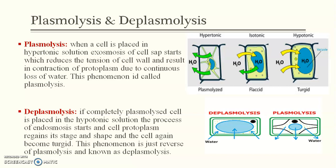Next is Deplasmolysis. It is the opposite of Plasmolysis. In this case, suppose we have a completely plasmolyzed cell and we put this cell in a hypotonic solution. The concentration of cell sap will be reduced, water will start to go into the cell, the cytoplasm will increase in volume, and the cell will regain its shape and size.